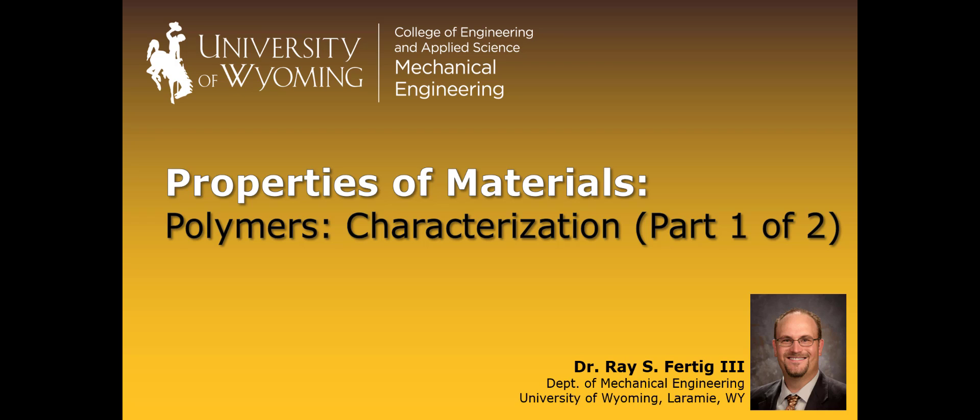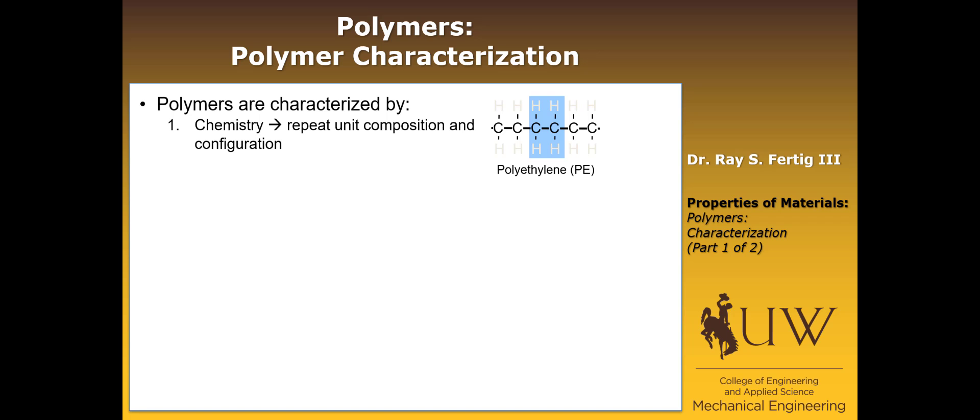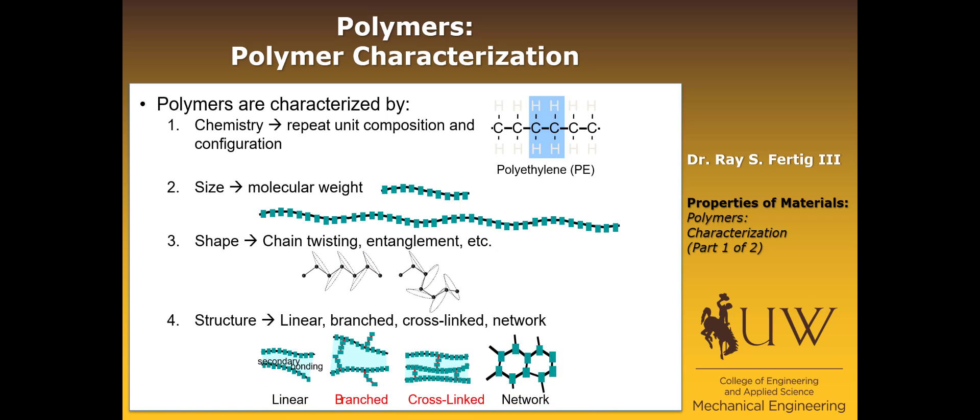This is the first of a two-part module on polymer characterization. We've already introduced polymers and some basic definitions and talked a little bit about what they are. We concluded with a discussion of the main ways in which polymers are characterized: chemistry, size, shape, and structure. We're going to go through each of those four characterizations in this lecture.